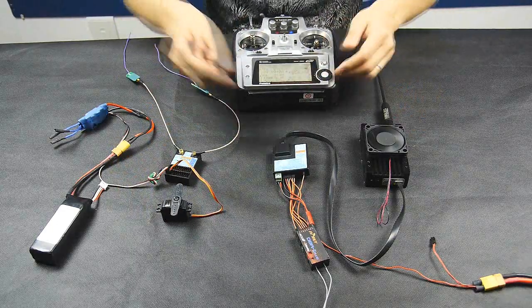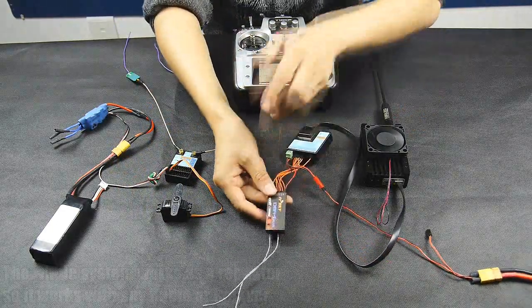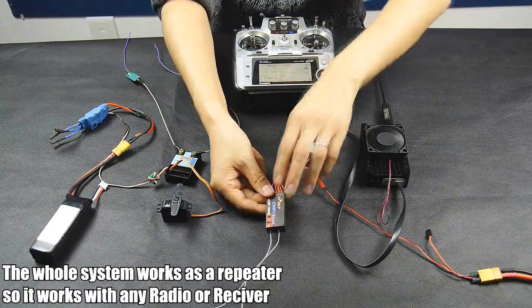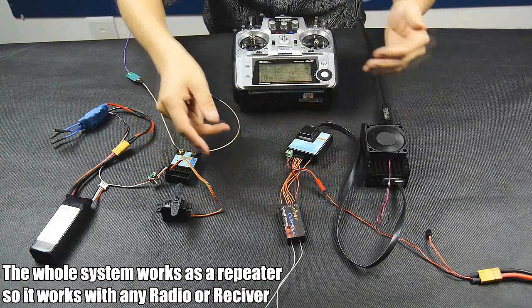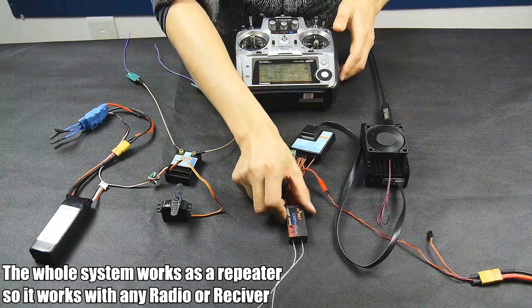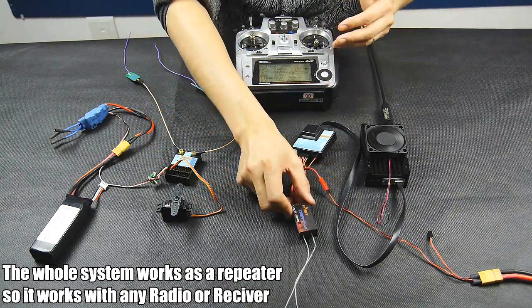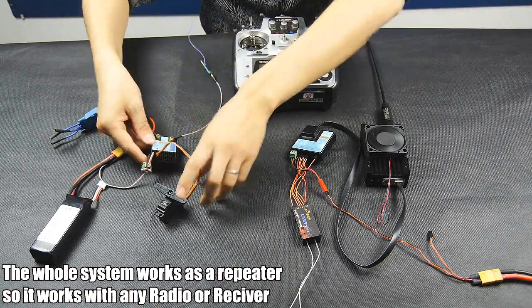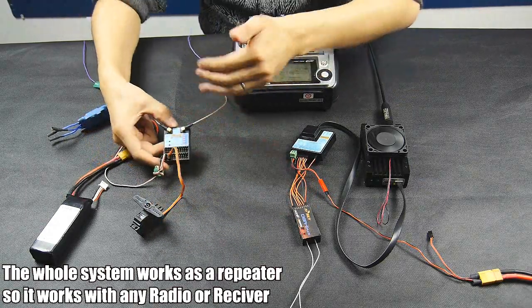But actually you can see my 8 channel receiver module for this radio is just here. Actually when you're going to use it, this receiver will be on the ground but not in the plane. What's in the plane is this receiver. So you can see what's on this receiver.